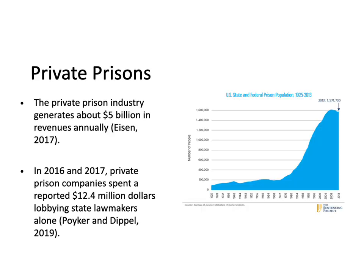In her 2017 book, researcher Lauren Brooke Eisen noted that the private prison industry in the United States was then generating about $5 billion in revenue every single year. Because locking people up is lucrative, these companies also spend money lobbying. In 2016 and 2017, private prison companies spent a reported $12.4 million lobbying state lawmakers alone. Lobbying in this case refers to campaign contributions and other reported gifts to politicians — it can incentivize lawmakers' voting behavior. If you receive a check for half a million dollars in campaign contributions from a company via a PAC, you might tend to vote for policies favorable to them or else they won't donate for your re-election.